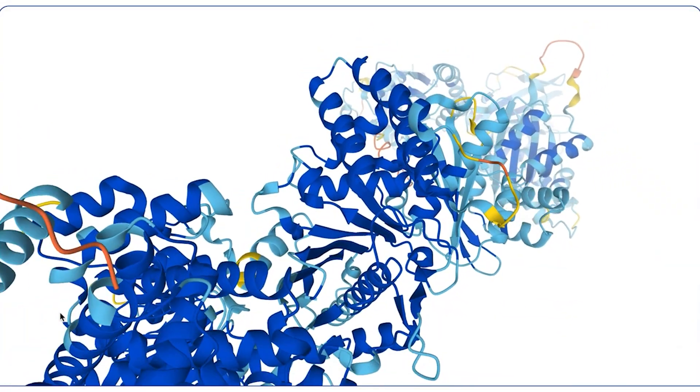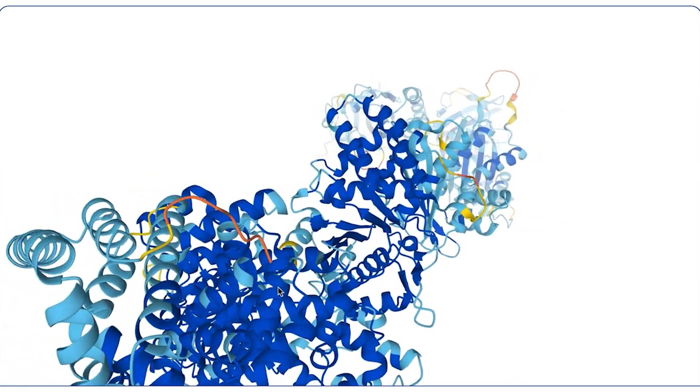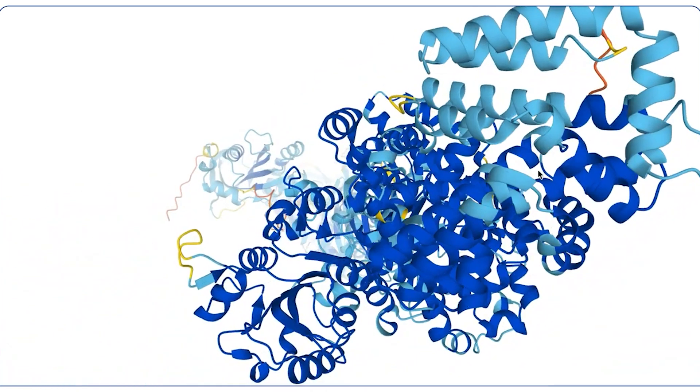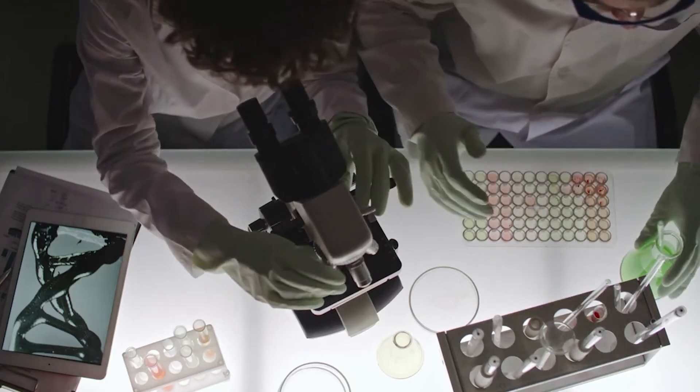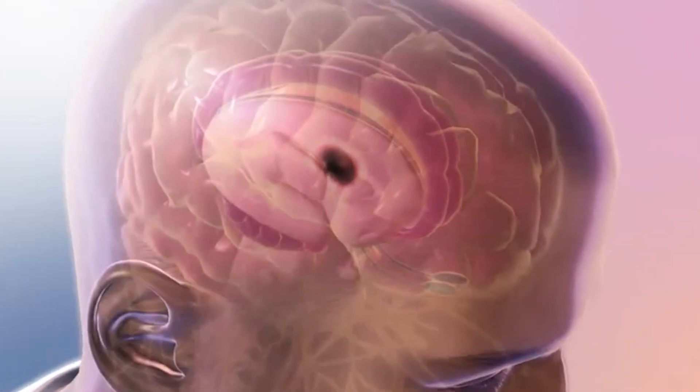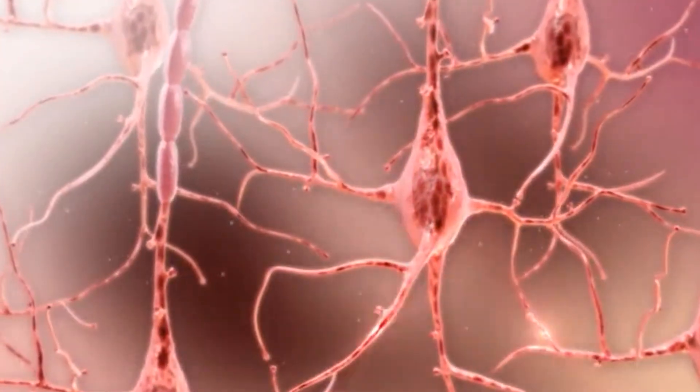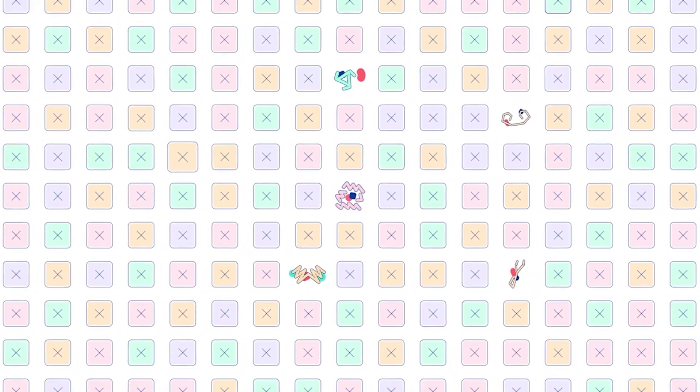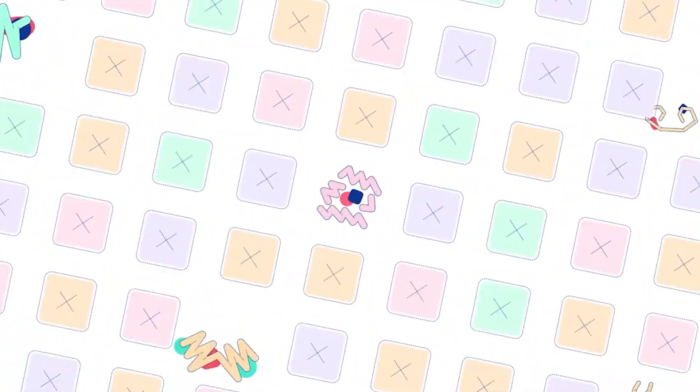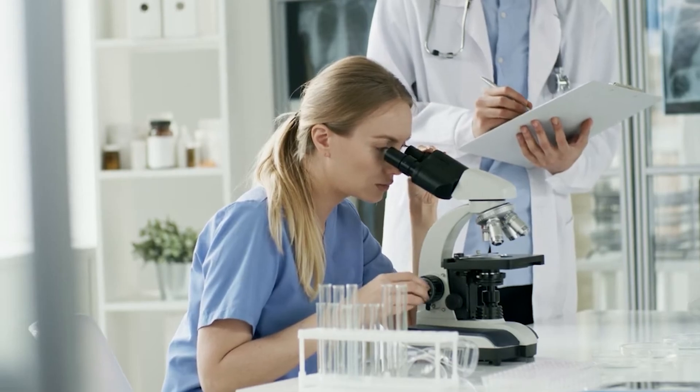DeepMind's AlphaFold achieved something extraordinary in 2020. It figured out how to predict protein structures with unprecedented accuracy. Why does that matter? Because understanding how proteins fold and function is fundamental to understanding virtually every disease. Cancer, Alzheimer's, Parkinson's, they all involve proteins behaving badly. AlphaFold gave scientists a road map to understanding these diseases at their most basic level, potentially accelerating drug discovery by decades.